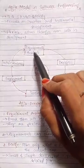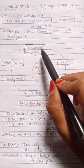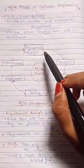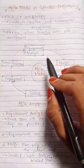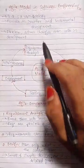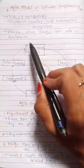We can add requirements whenever we want, and we can remove requirements whenever we don't want them. That's why the Agile model is very flexible.